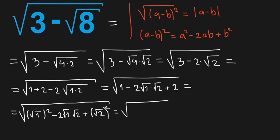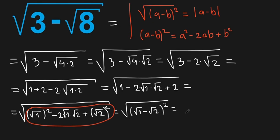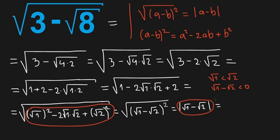This equals square root of the expression. Here we recognize our formula (a minus b) squared, where a is square root of 1 and b is square root of 2. So we have square root of (square root of 1 minus square root of 2) squared, which equals absolute value of (square root of 1 minus square root of 2). But we know that square root of 1 is smaller than square root of 2, so the expression inside is negative. Therefore the absolute value requires a minus sign in front of the brackets.